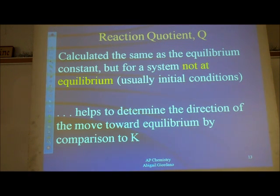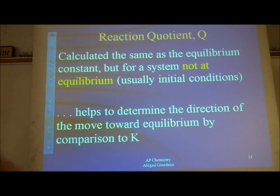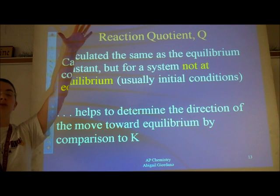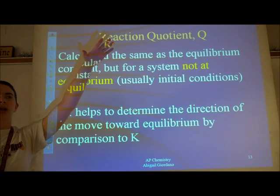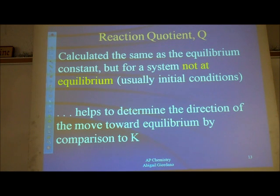For example, maybe I have not made enough products yet to reach equilibrium. If I need to make more products, the reaction needs to move in the forward direction — use up the reactants to make more products. Or maybe Q tells me I've made too many products and I need to shift back in the other direction, because I've got too many products and not enough reactants, so I would need to shift in the reverse direction. It tells me which direction the equation needs to move to get to equilibrium.